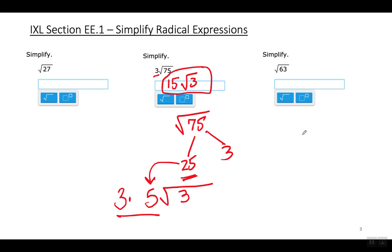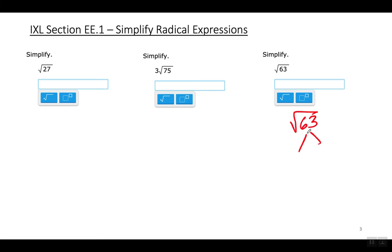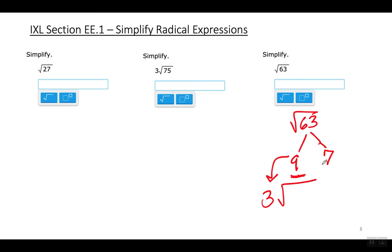The square root of 63 — break it up into 9 times 7. The square root of 9 is 3, and the 7 stays underneath the radical sign. That's easy. Now, you need to know your times tables for these. If you don't, it's going to be much harder. You're already in high school, and you should have learned your multiplication tables long ago. It really just takes 5 or 10 minutes a day for 2 or 3 days. You're using them in class all the time. Anyway, the answer to the square root of 63 is 3 square root of 7.